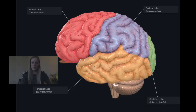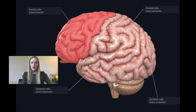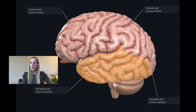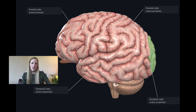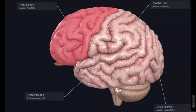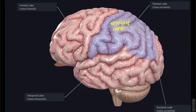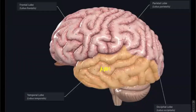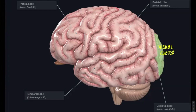Let's start by reviewing our brain lobes. We have our frontal lobe anteriorly, our parietal lobe just posterior to that, our temporal lobe immediately inferior to both of those, and last our occipital lobe at the very posterior part of our brain. Our frontal lobe deals mainly with motor planning and function. Our parietal lobe deals with sensory input and perception. Our temporal lobe is our main auditory cortex and our occipital lobe is our main visual cortex.